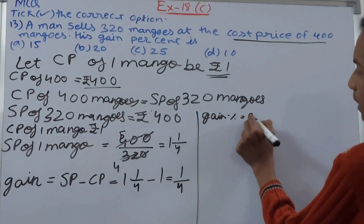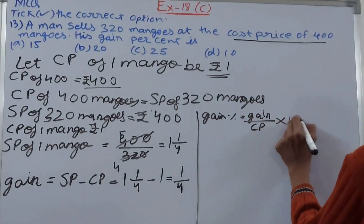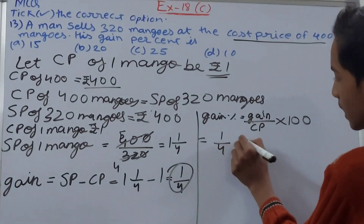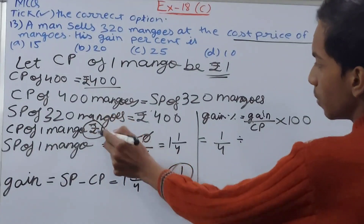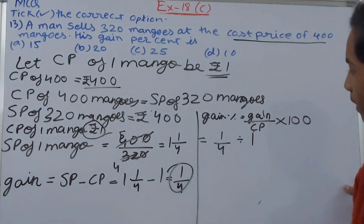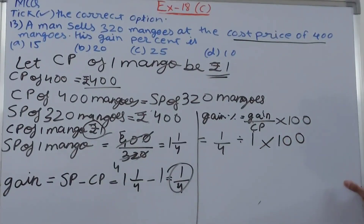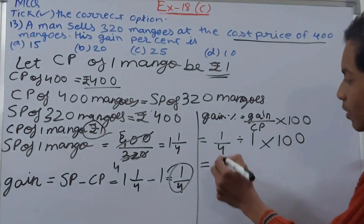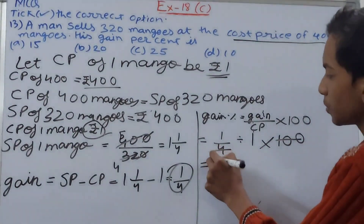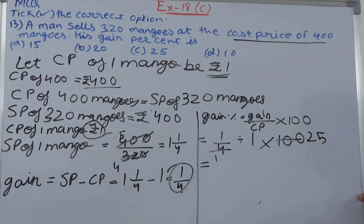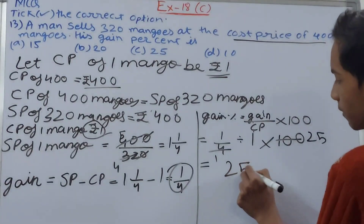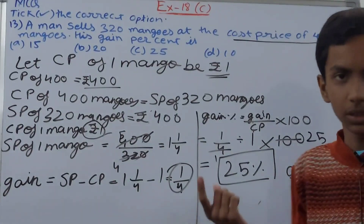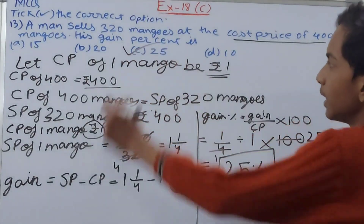Now we find the gain percent: Gain% = (Gain ÷ Cost Price) × 100 = (1/4 ÷ 1) × 100. Dividing by 1 has no effect, and 4 cancels into 100 to give 25. So the gain percent is 25%. Checking the options, option C is 25 — so the answer is option C.